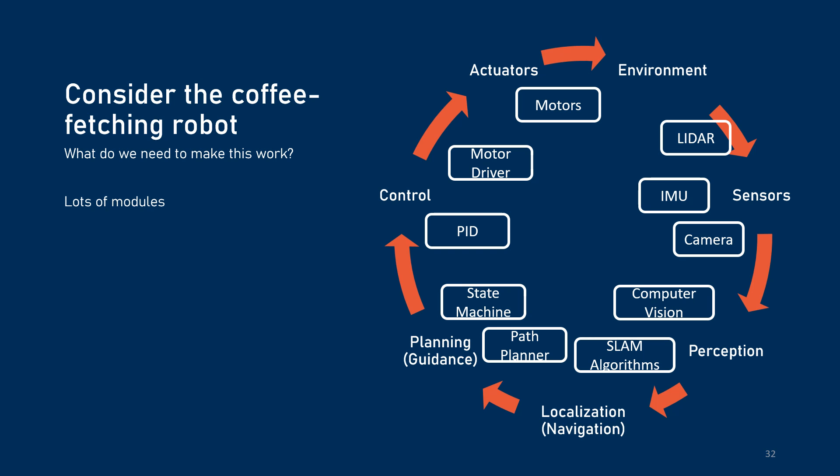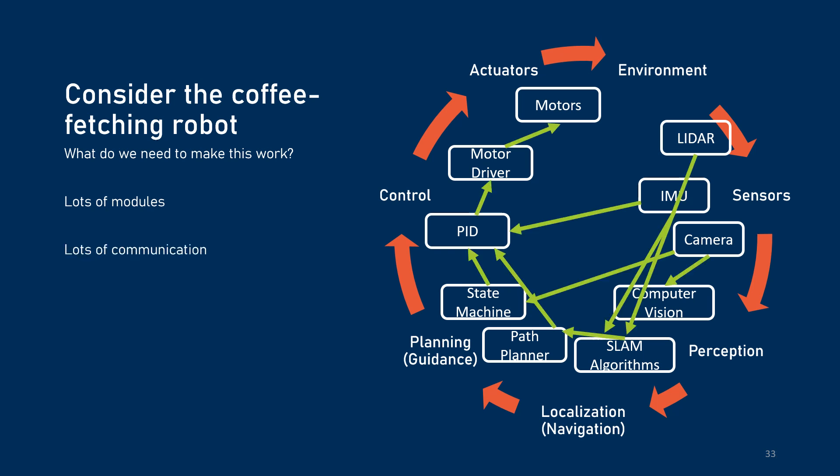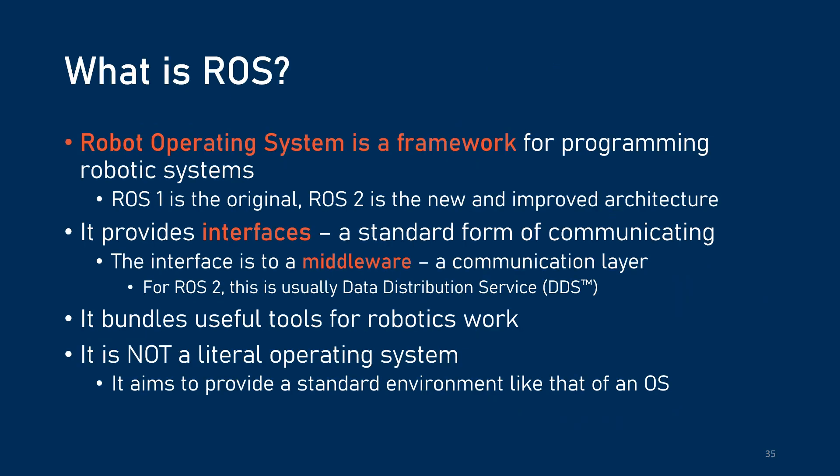Lots of different modules need to be made to make this work, and they all need to talk to each other. Imagine if you had to do this for every single advanced robot you've built — that would be really infeasible, it would take forever, nothing would get done. This problem of having to create so many modules is what ROS was created to address.